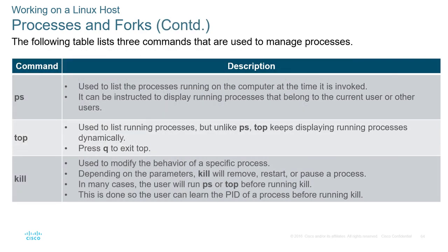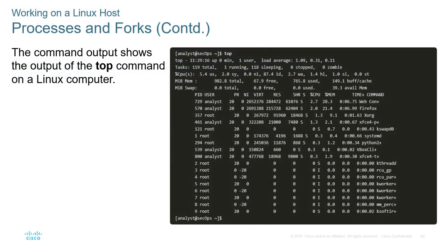To manage processes in Linux: ps lists the processes, top ranks the running processes dynamically — showing which are using the most CPU at the top — and kill stops a certain process. The top command shows the PID, the user running the process, privilege level, virtualization, resources, and more.